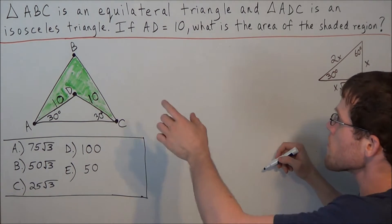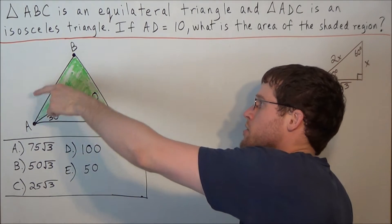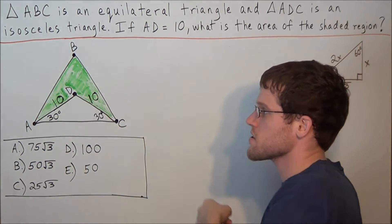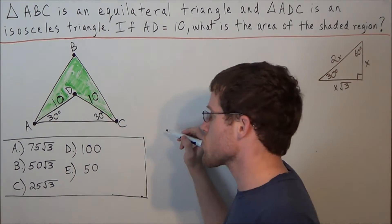So now that we have this, we're going to need to find the area of the big triangle ABC and subtract the area of the small triangle ADC. To do so, we're going to construct an altitude.